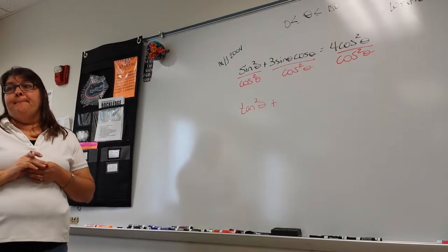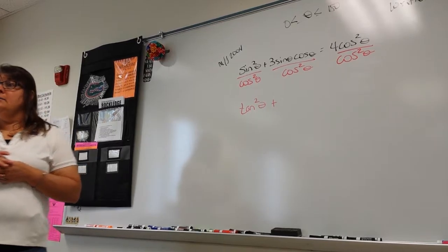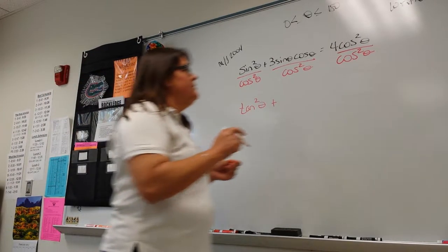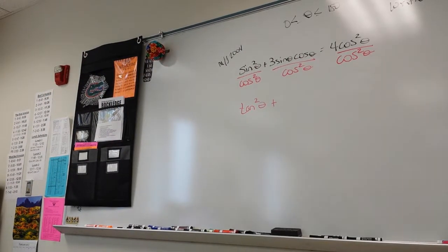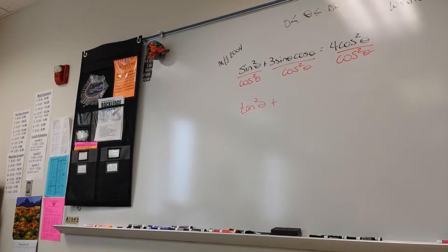Student: Can you separate the cosine squared on the bottom to make two different fractions? Teacher: Sure. It would look like this — I would have three sine cosine over cosine times cosine. That gives three tan, and then the cosine becomes tangent.